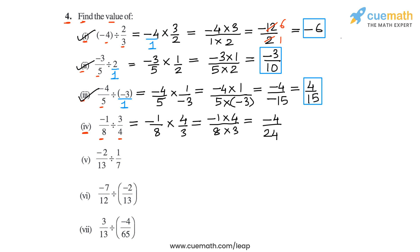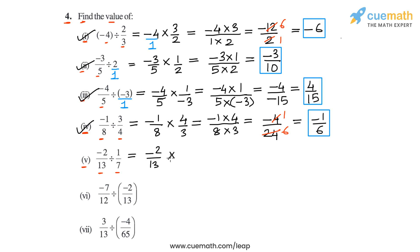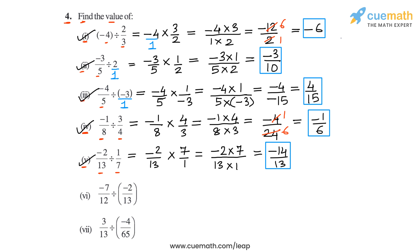The HCF of 4 and 24 is 4, so dividing above and below by 4 gives minus 1 in the numerator and 6 in the denominator, giving us minus 1/6. So in part 4, the value of the expression is minus 1/6. In part 5, we have to calculate minus 2/13 divided by 1/7. We write this as minus 2/13 multiplied by the reciprocal of 1/7, which is 7/1. Multiplying gives minus 2 into 7 over 13 into 1, which is minus 14/13. So in part 5, the value of the expression is minus 14/13.